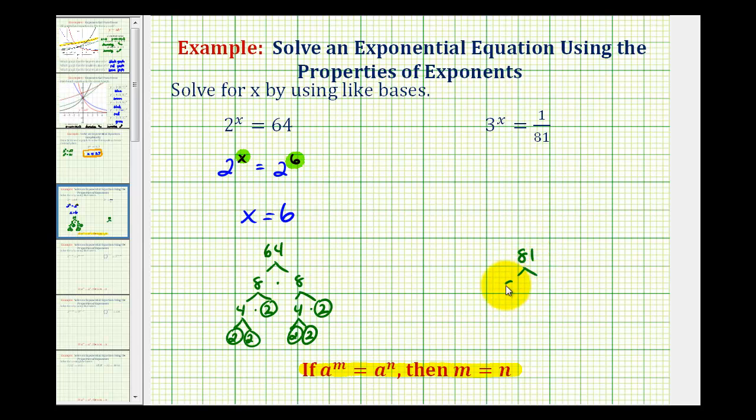81 equals 9 times 9, and of course 9 equals 3 times 3. So 81 equals 3 to the fourth.